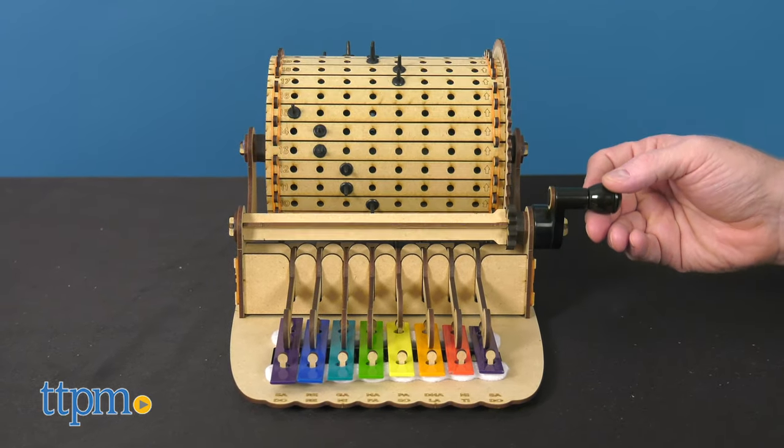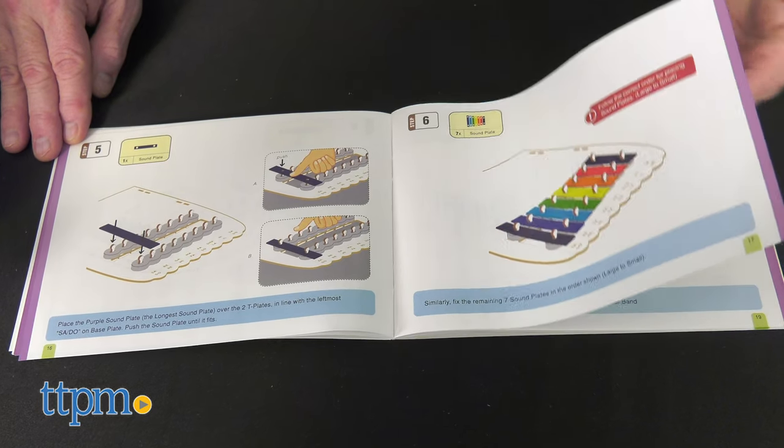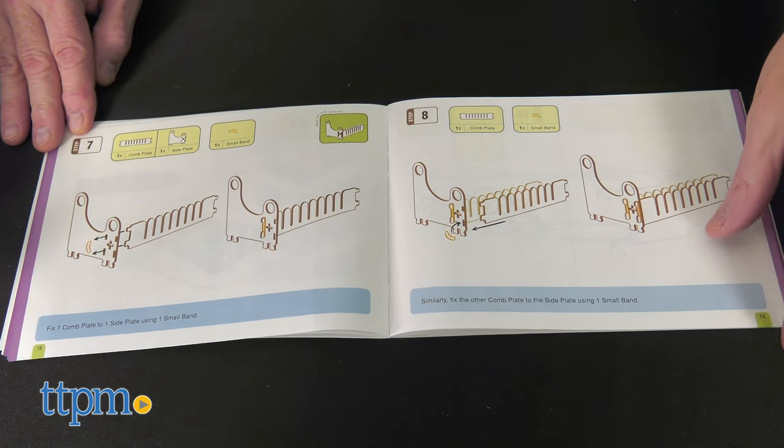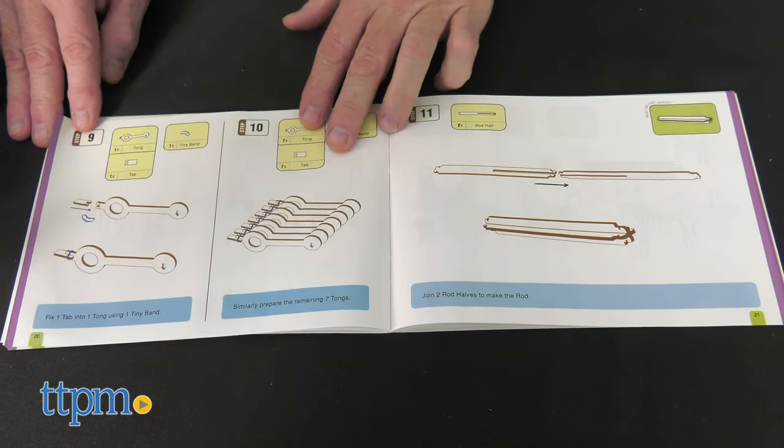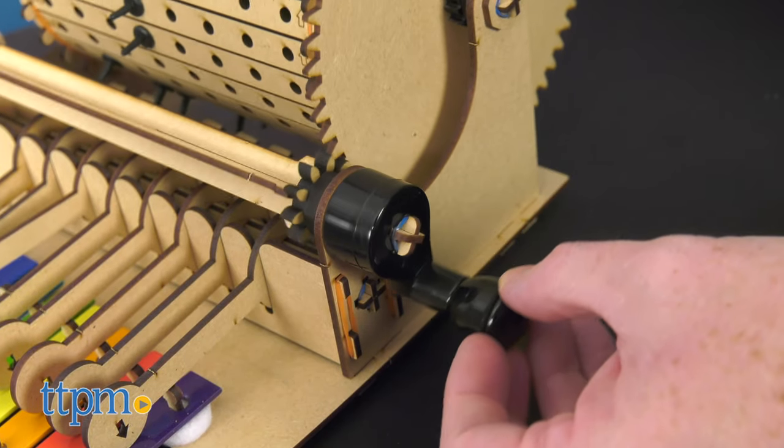The XyloFun is a cool little music maker that comes with detailed instructions on assembly. There are even instructions on how to read the instructions. The XyloFun comes with 208 elements including metallic sounding plates, plastic handles, and wooden pieces.